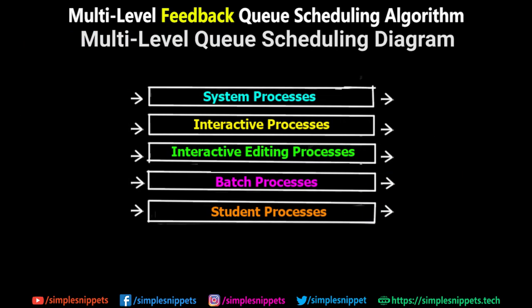In the normal multi-queue scheduling algorithm, processes are permanently assigned to a queue on entry to the system - there is no moving of processes between different queues. In simple multi-level queue scheduling, if a process is a system process it is assigned to queue number one, and if it is a batch process it is assigned to queue number two. Once assigned to those respective queues, they do not switch between different queues depending upon scheduling needs. This makes it very inflexible, and this is a major disadvantage because it causes starvation.